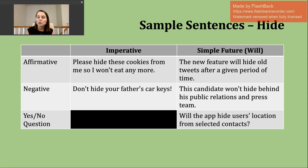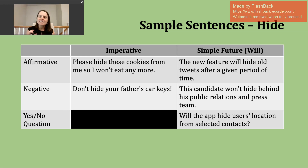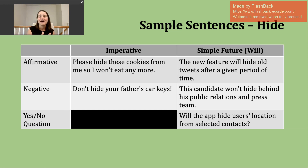Finally, for a yes-or-no question using will in the simple future, start with will, then the subject, then the base verb. Example: will the app hide user's location from selected contacts? This is connected to technology — many people use smartphones and apps and give away privacy through contacts or location access. Hide is becoming a more popular verb when talking about technology and the ability to keep information secret or private.